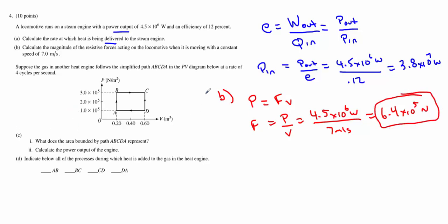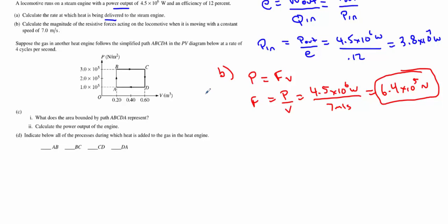Now, C. Suppose the gas in another heat engine follows this ABCDA path in the PV diagram below, and it takes a rate of four cycles for every given second. First and foremost, what does the area bounded by the graph represent? This is just a concept you need to know. The area of a PV graph will always be the work. So that's what we're looking for. We're literally just looking for one word: work.